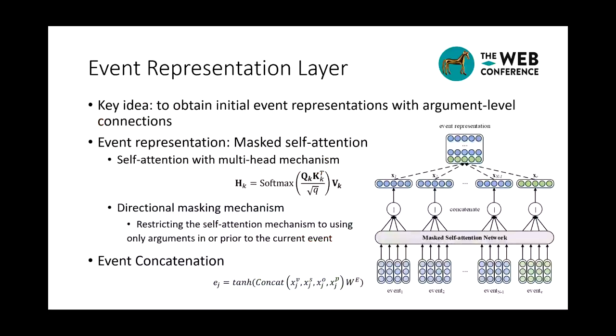In the first part, we developed a masked self-attention network to capture fine-grained connections between arguments. Self-attention with multi-head mechanisms aims to mine hidden semantic information in different embedding subspaces. Directional masking mechanism further restricts the self-attention to use only arguments in or prior to the current event. Finally, we concatenate all argument representations in each event to composite an entire event representation.